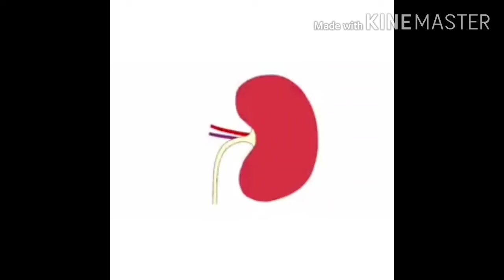The job of the kidneys is to filter the blood. Basically, we get dirty blood entering and clean blood leaving, and all of the waste products taken from that dirty blood exit as urine. The terms dirty blood and clean blood aren't particularly scientific, but it's a really convenient way to think about it.